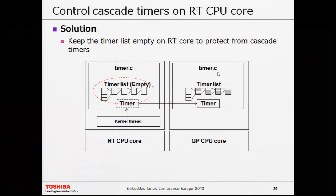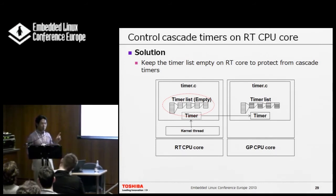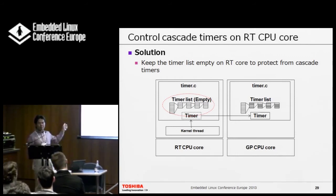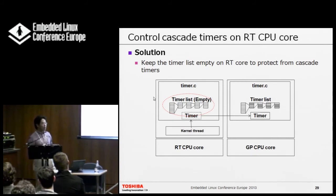To control the cascade timer, the most important solution is to keep the timer list on the real-time CPU core empty. If this list is empty, no cascade occurs. We only need timers for real-time tasks to run on the real-time core — all other timers must go to the other core. There are three issues which cause cascading timers on the real-time core.